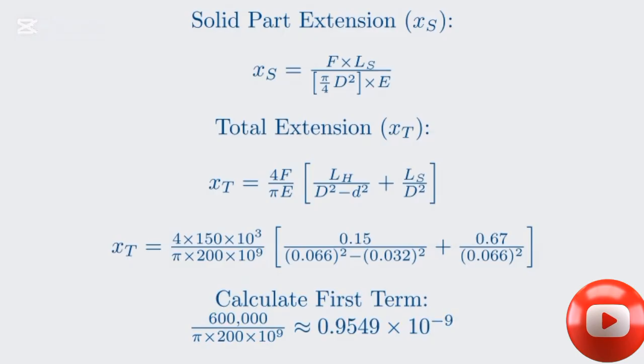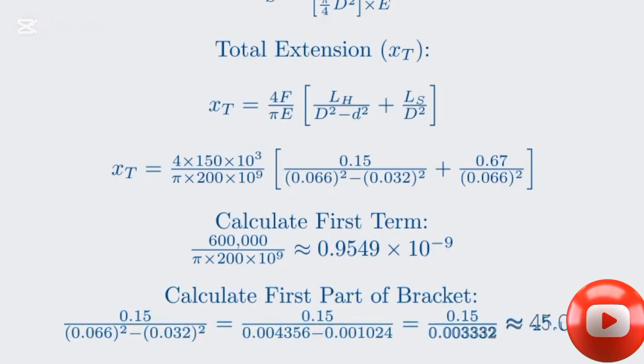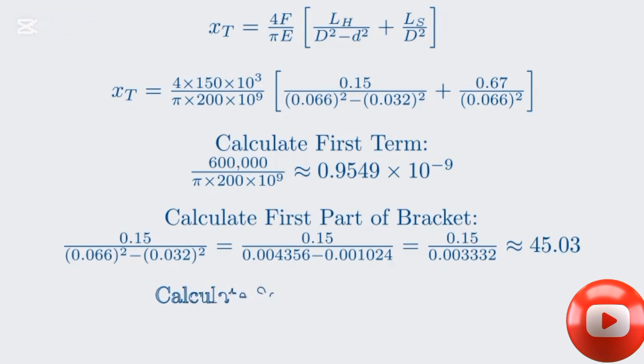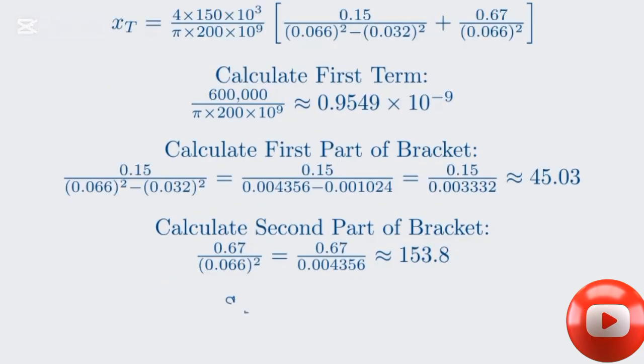Now, let's calculate the value of the term inside the bracket. For the first part of the bracket, 0.15 divided by the difference of the squares is approximately 45.03. For the second part, 0.67 divided by 0.066 squared is approximately 153.8. Adding these two values inside the bracket gives us approximately 198.83.